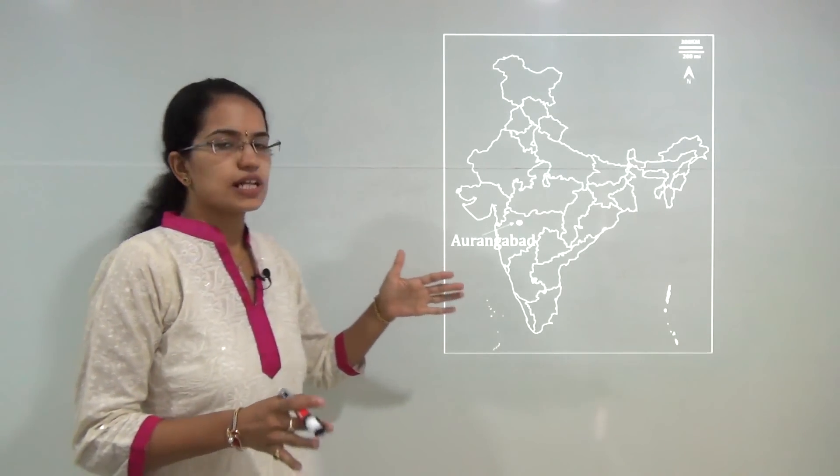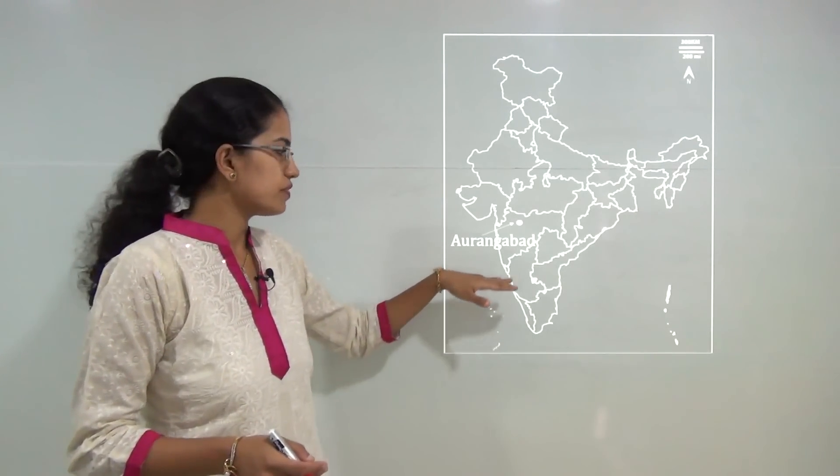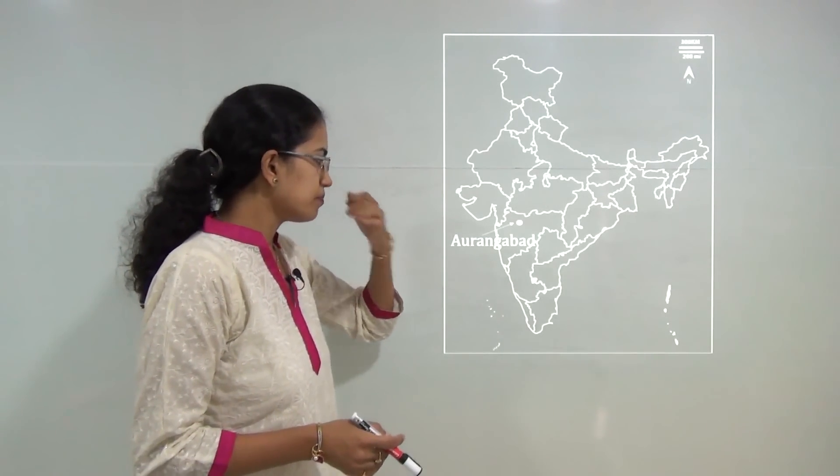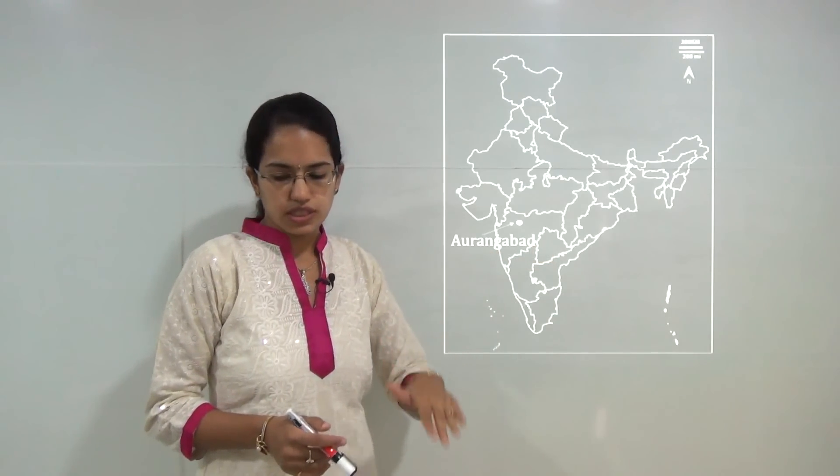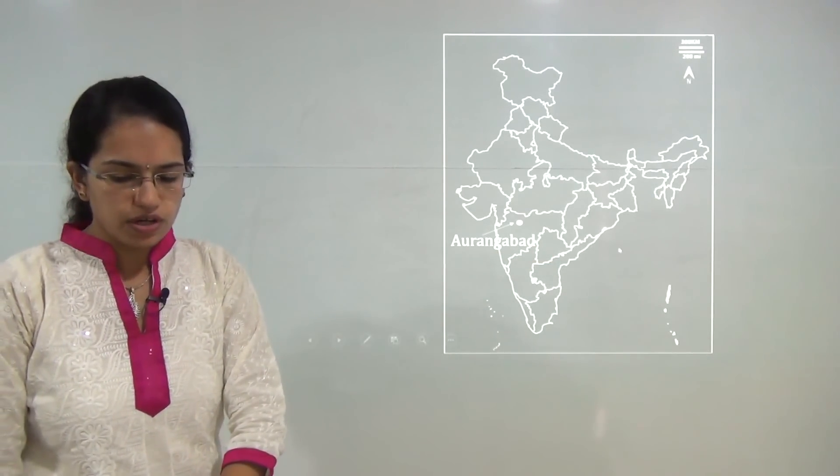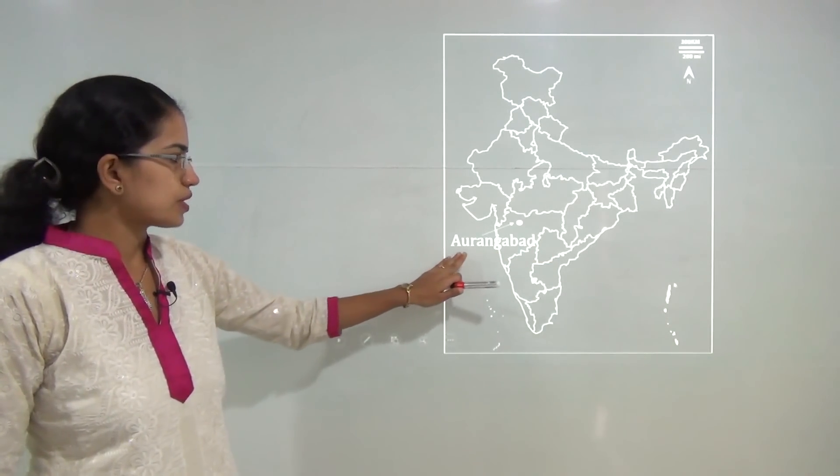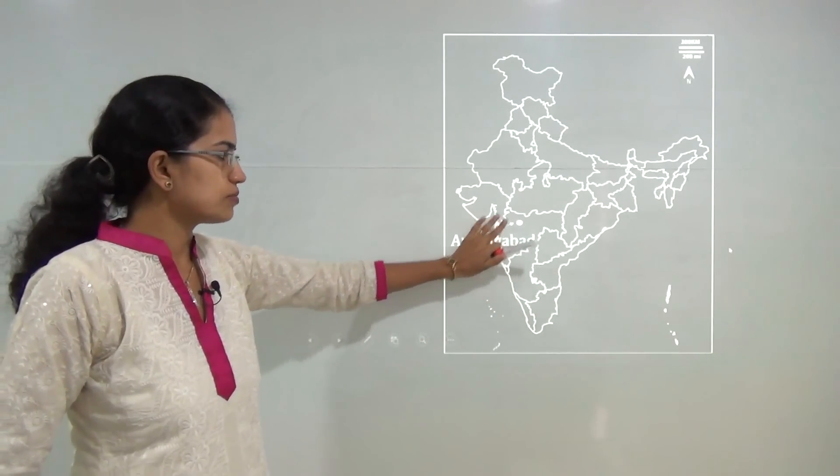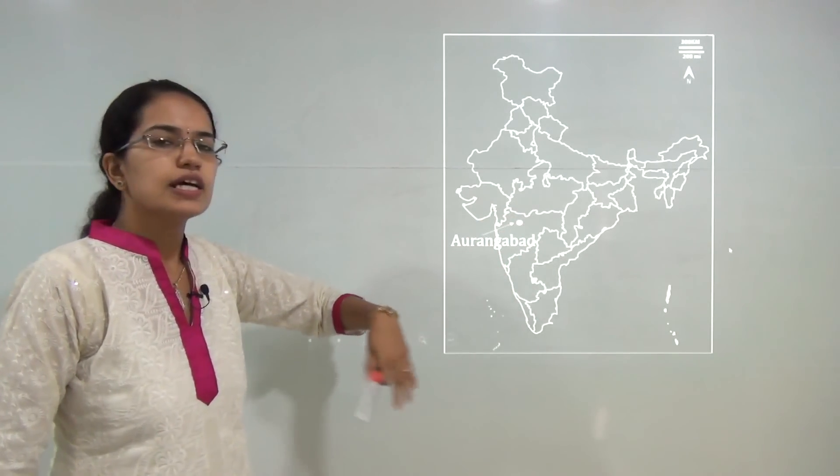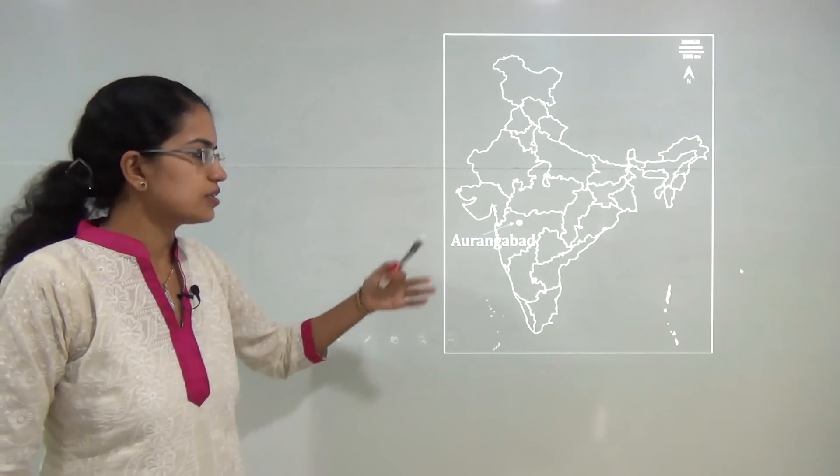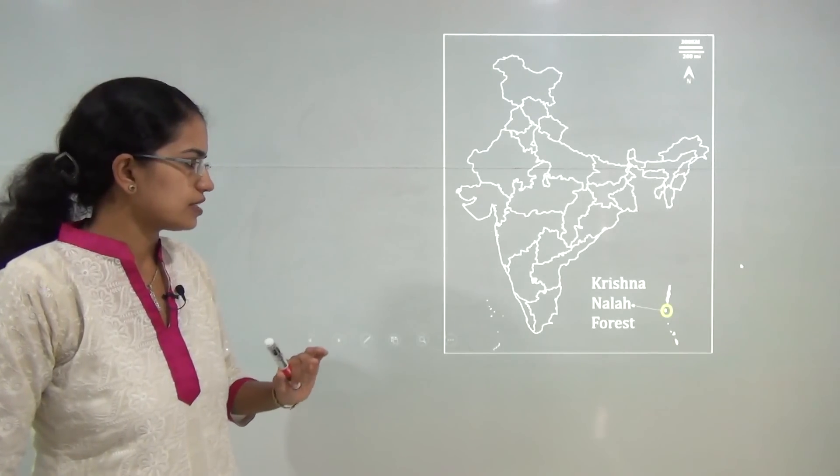In every class we will cover 20 locations. The first location for today is Aurangabad. Aurangabad was in news recently for the national facility for airborne research program and is located in Maharashtra. Under the description, you can mention the recent initiative that has been released.